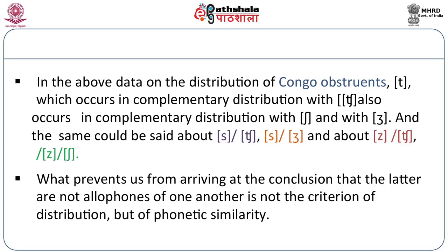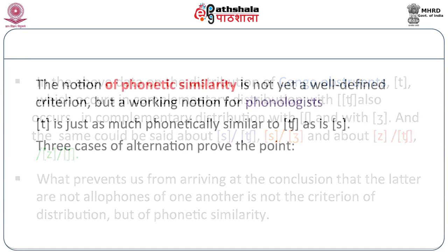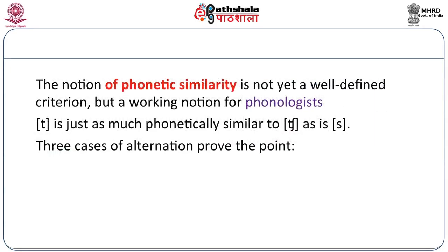The assumption is that /tʃa/ is phonetically closer to /ta/ than /ʃa/ is to /ta/. /tʃa/ is closer to /sa/ and /ʒa/ is closer to /za/. And that is how we assume that /tʃa/, /ʃa/, and /za/ are allophones of /ta/, /sa/, and /za/. However, the notion of phonetic similarity itself is not such a clearly defined notion.